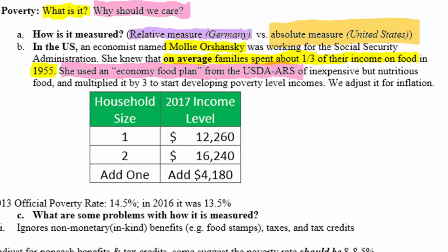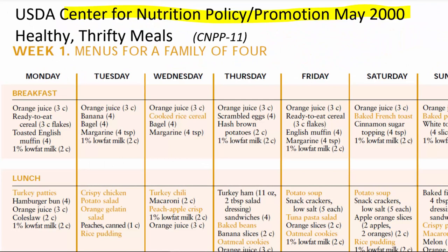The economy food plan was food that was supposed to be both nutritious and tasty that a lower income family could buy and prepare to meet all their nutritional requirements. It was created by agricultural scientists and dieticians. This is an example of one of these thrifty, low-cost, yet healthy meal plans from the USDA — this particular one is from May 2000, though similar plans existed in the 1950s and 1960s.